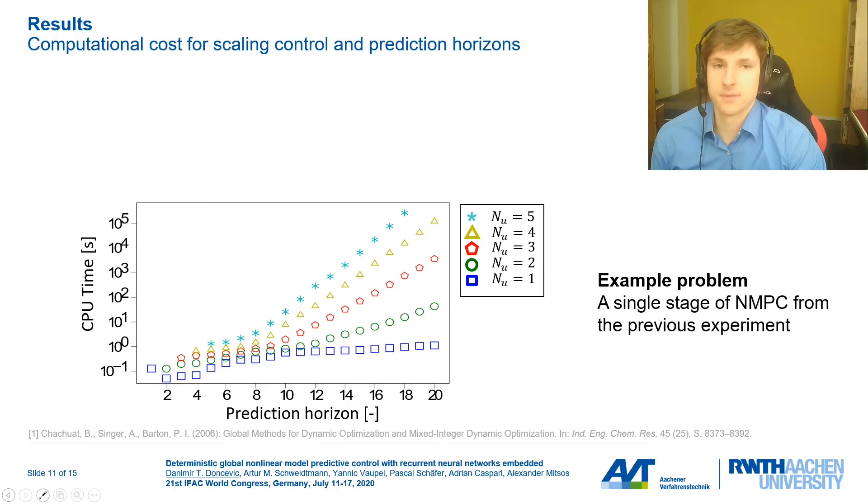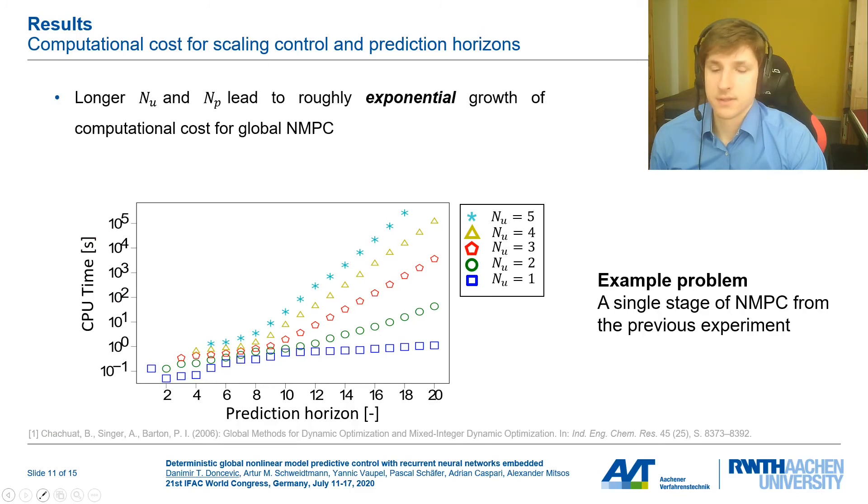Further, we examined how the global solution times scaled when we increased the horizon lengths. For this, we have taken one stage of NMPC from the problem shown before and simply varied the control and prediction horizons. You can see on the x-axis prediction horizon from 1 to 20, different markers indicate different control horizons. We measured the solution time required to solve a stage of NMPC to global optimality. Note that the scale is logarithmic. What we found is that increasing the control horizon leads to roughly exponential increased computational cost, which is kind of expected because adding variables to global optimization is expensive. But we have also found a similar increase for longer prediction horizons. This is linked to the tightness of McCormick relaxations that I have talked about earlier. A similar effect was also observed by Chachuat and co-workers in their study for global dynamic optimization.